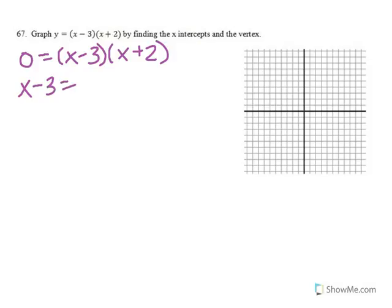Then set each piece equal to 0 and solve. So I get x equals 3 and x equals negative 2. Those are my x-intercepts, so graph them on the x-axis.